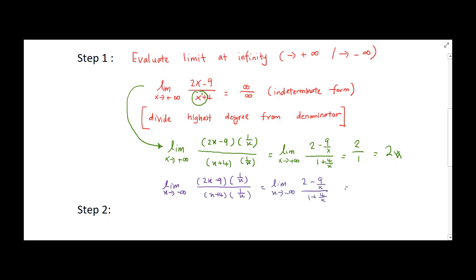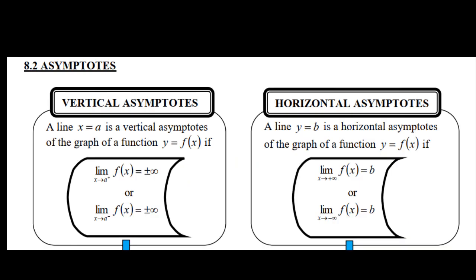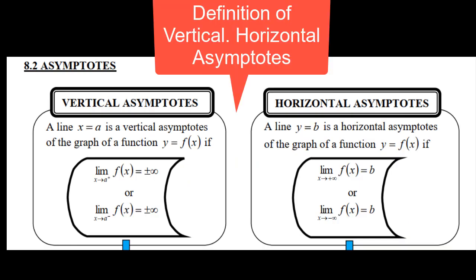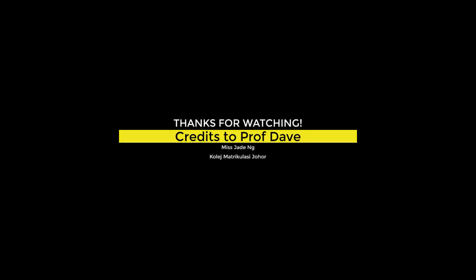So at last conclusion, we will say that y equal to two is horizontal asymptote. Okay guys, so do not forget about if you want to find the asymptote, you have to follow the definition of vertical and horizontal asymptote. Thank you for watching. See you, bye!